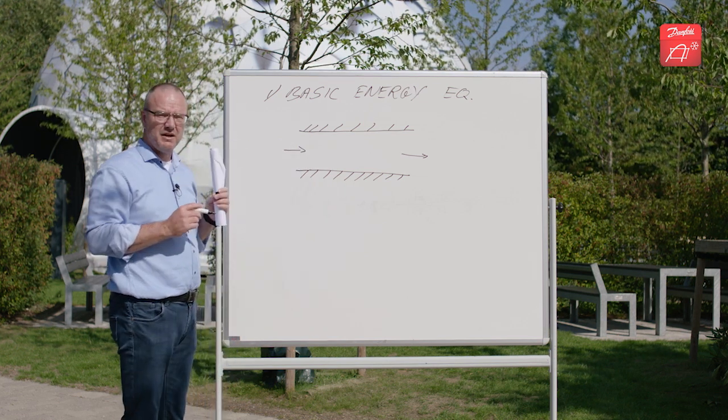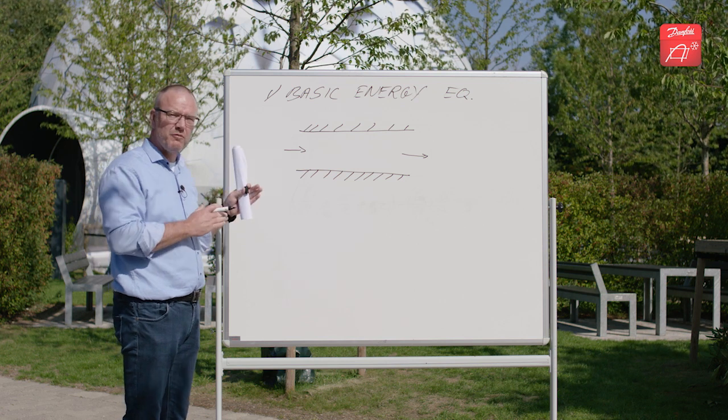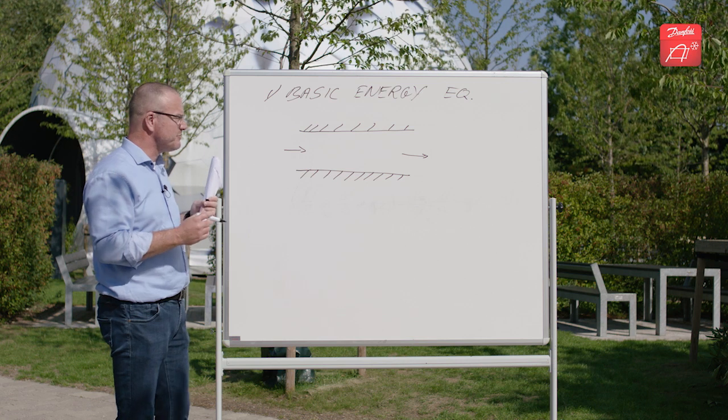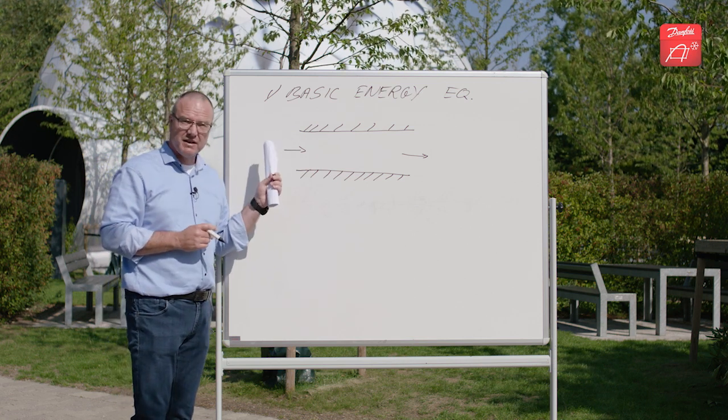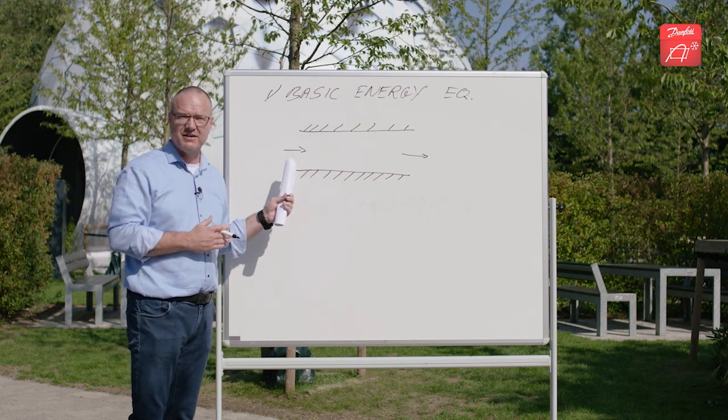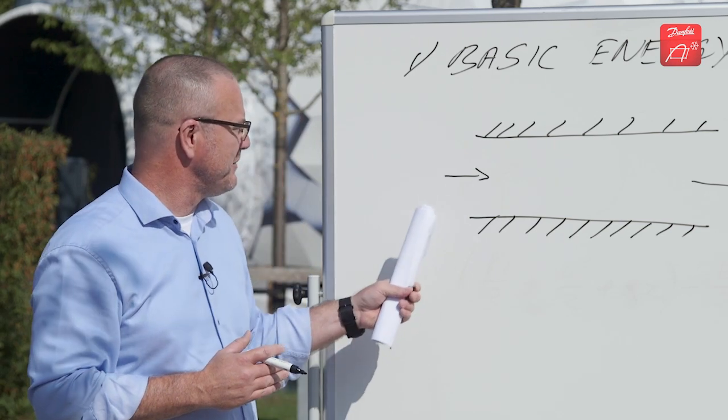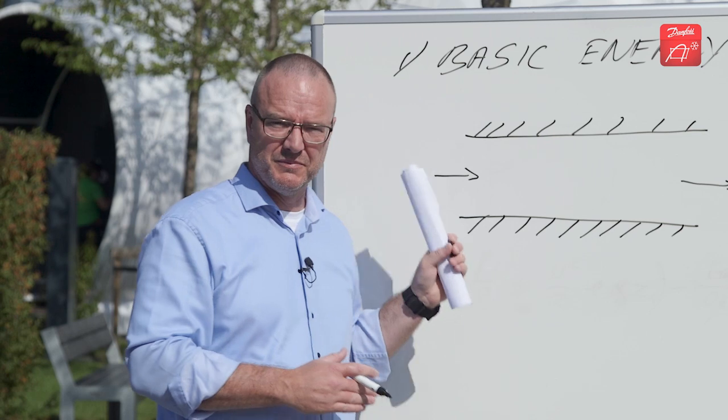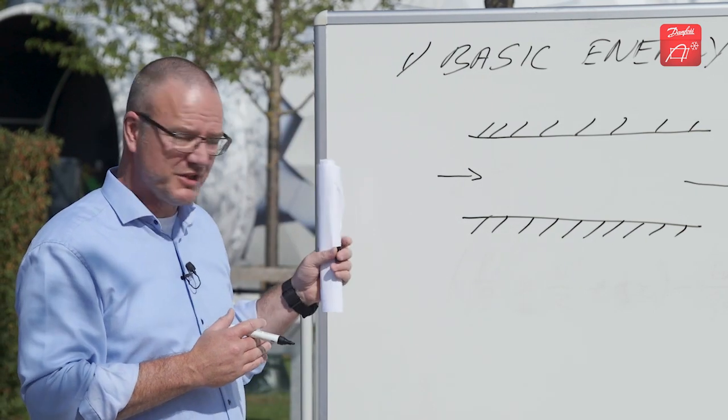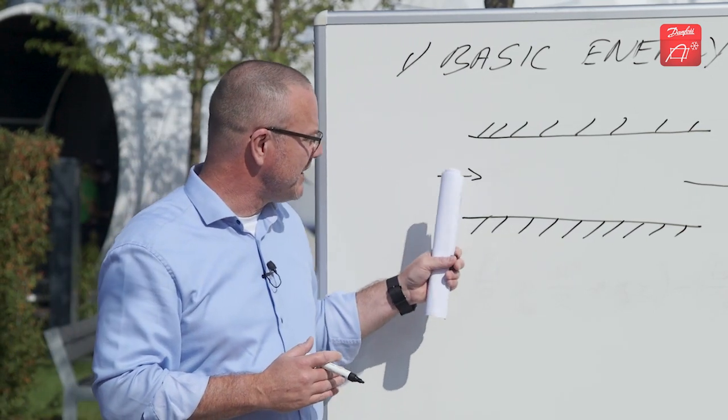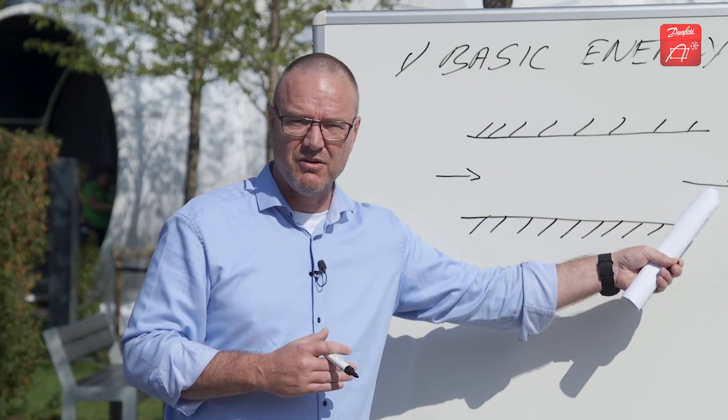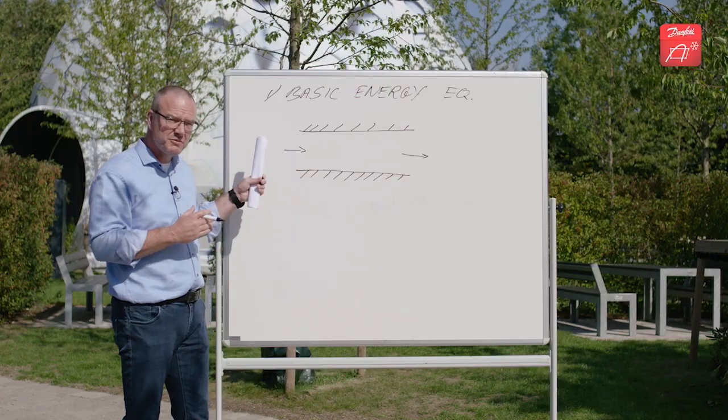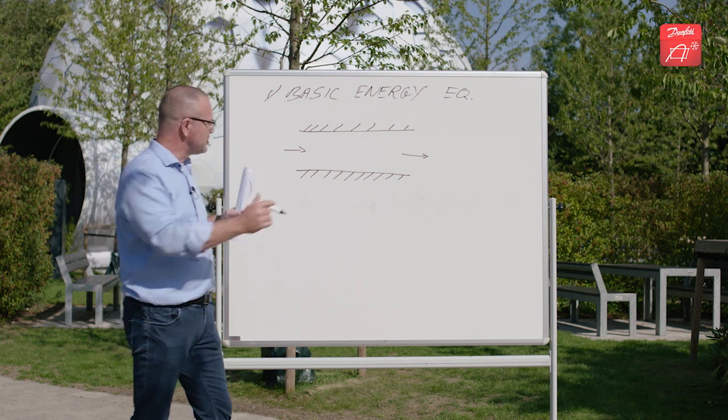If we make some very simple assumptions, we will end up with a more simple form of the energy equation. And the assumptions we will have is that the flow is incompressible - it means the density is constant. What that essentially means is that you cannot compress the flow as you go along. Also we will assume that the velocity coming in equals the velocity going out. That is sort of a consequence of the incompressible assumption.